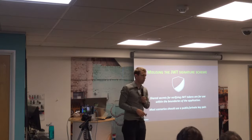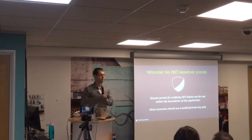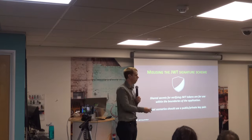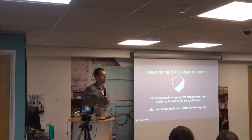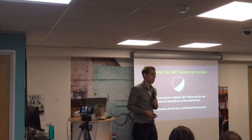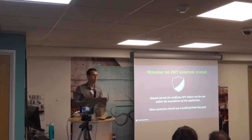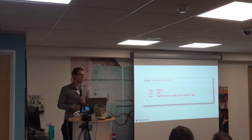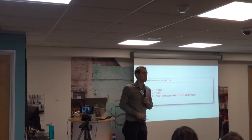Crypto never really solves a problem — it moves problems to other places. In this case, it moves the problem from tampering with the data to figuring out what key you need to use. That's the case with almost all crypto systems — protecting the data is kind of easy, you apply the algorithms correctly and you're done. But figuring out whether you can trust the key is the hard part. Fortunately for JWTs, the spec addresses this — you have to rotate keys and figure out what key was used to sign this, so there are mechanisms for that: a key identifier, or KID.